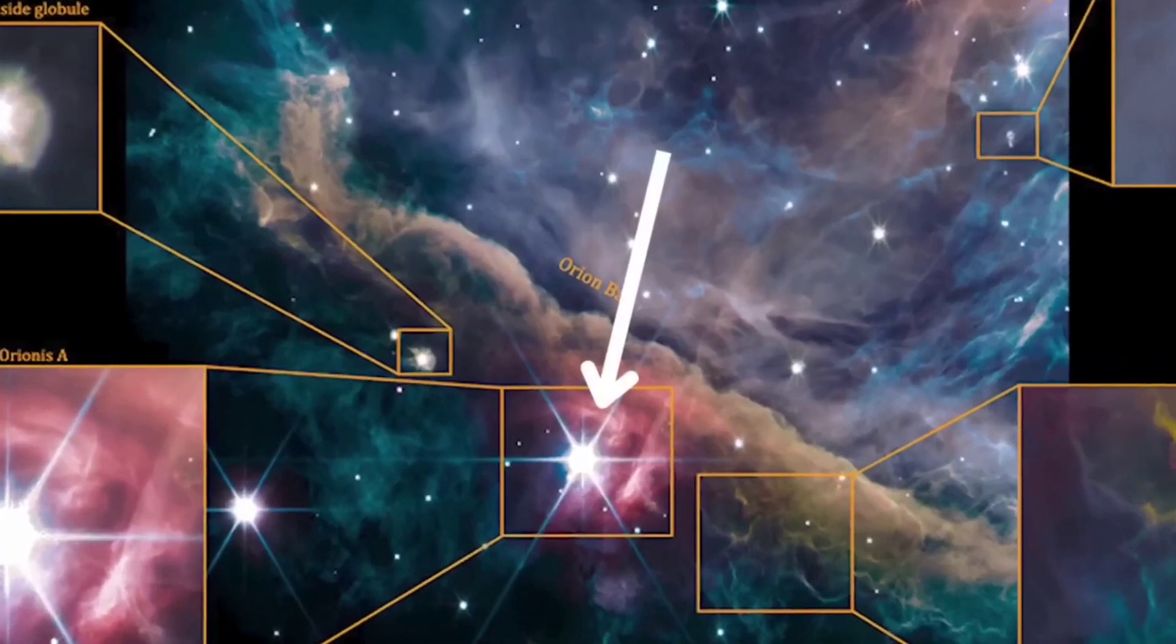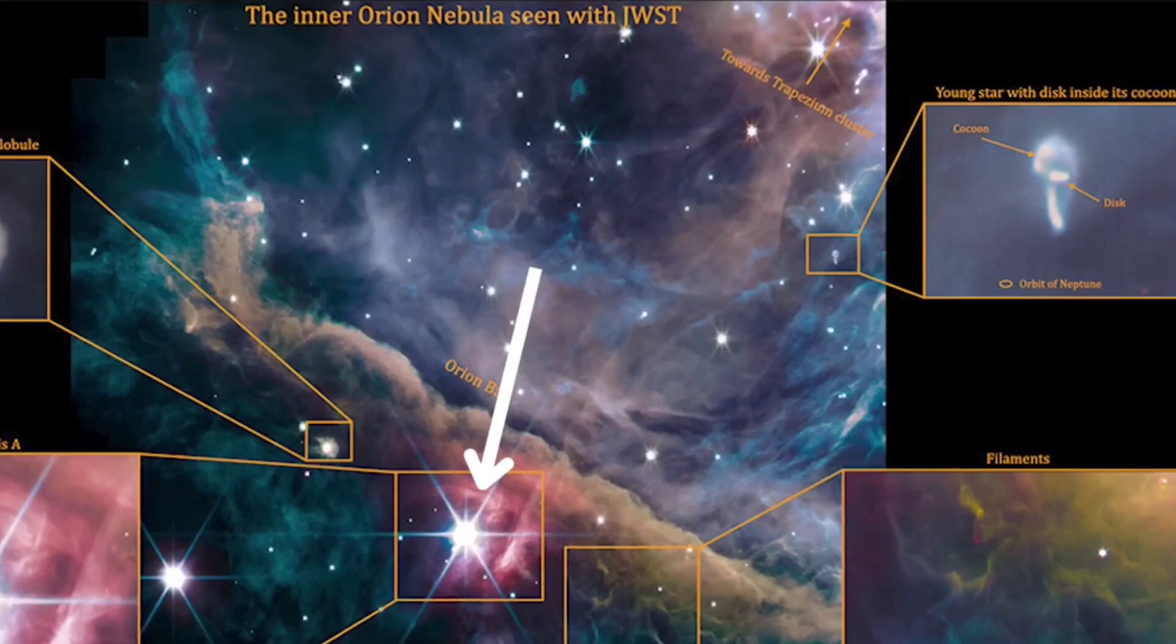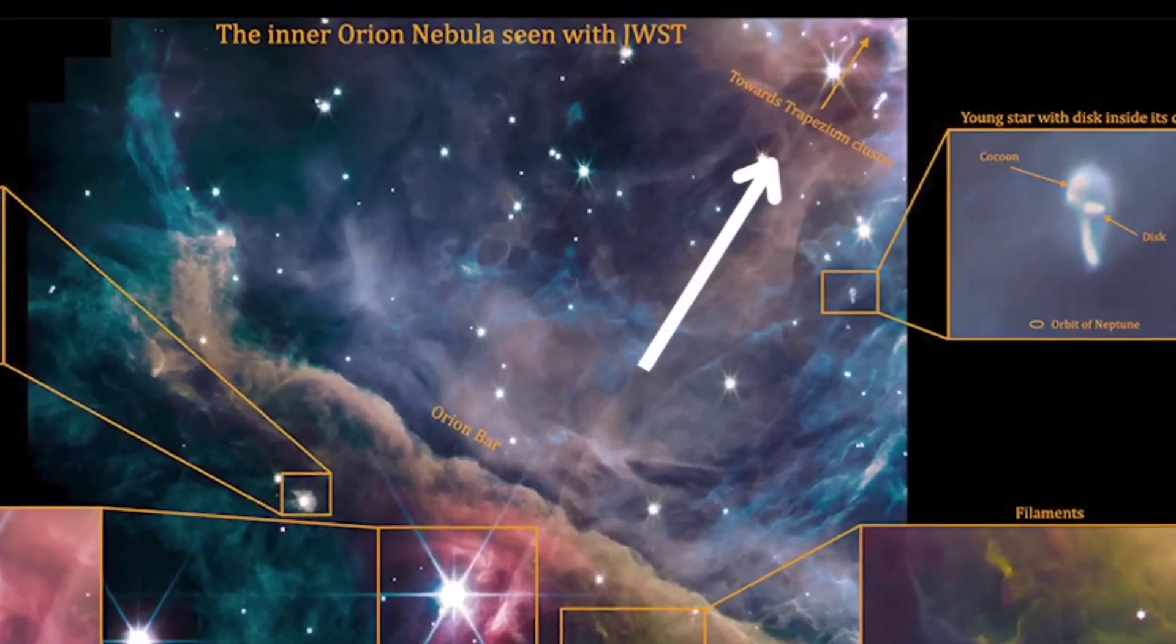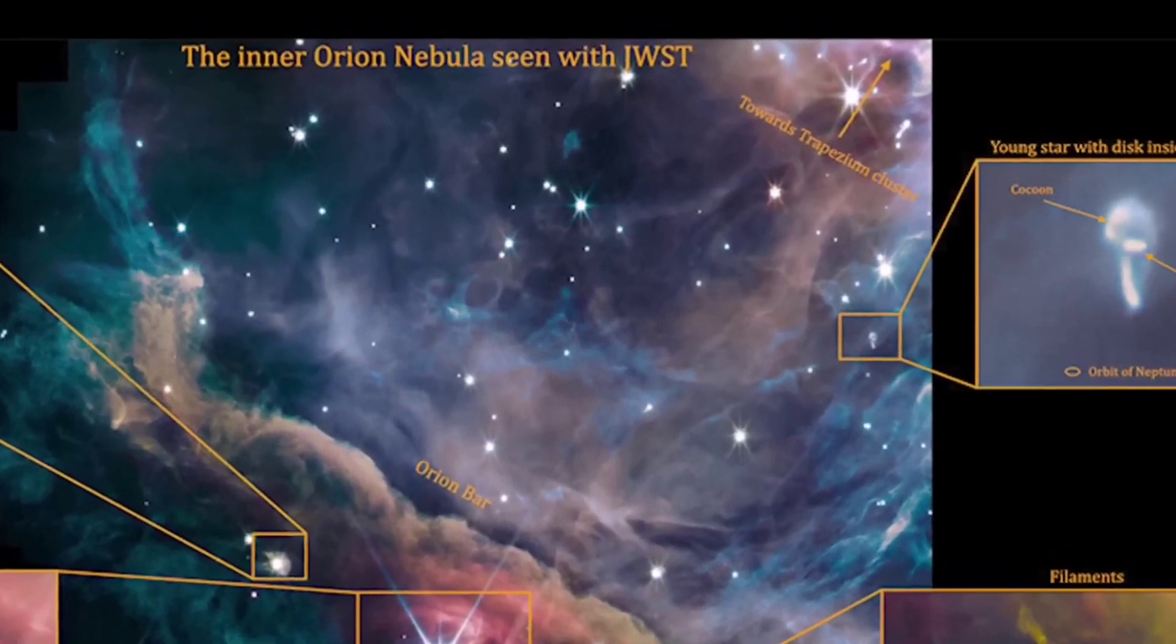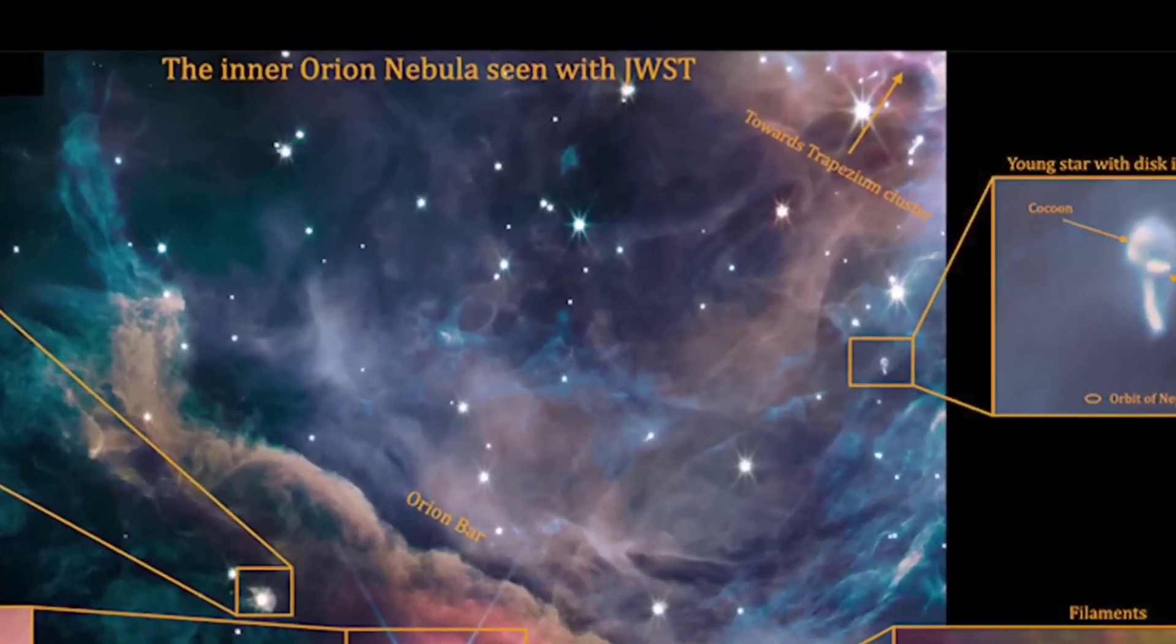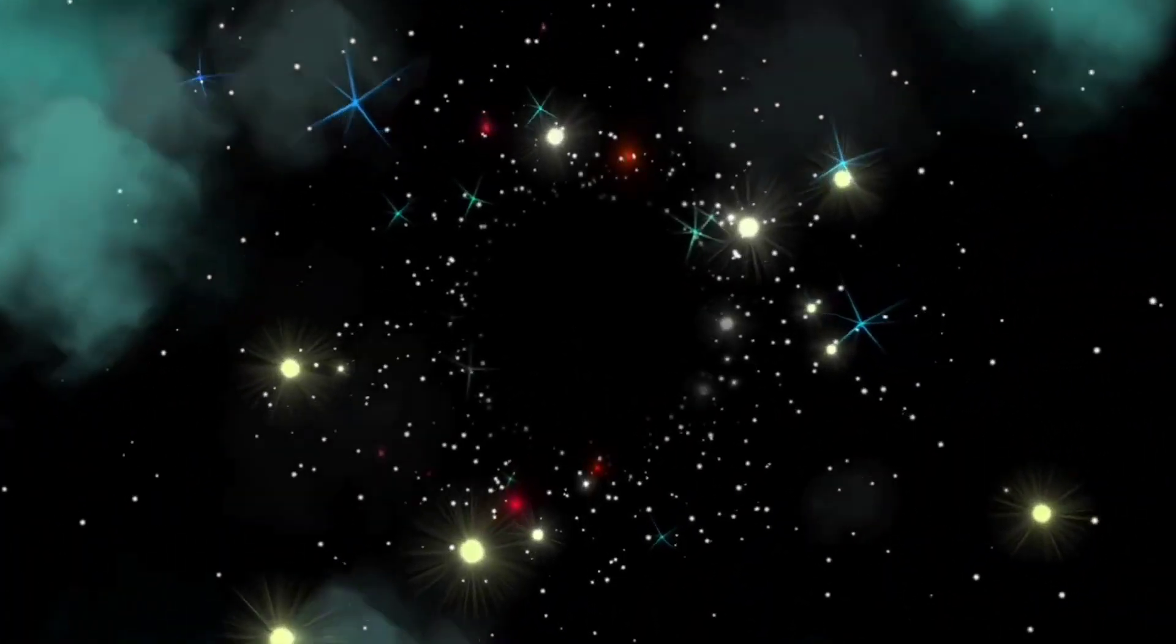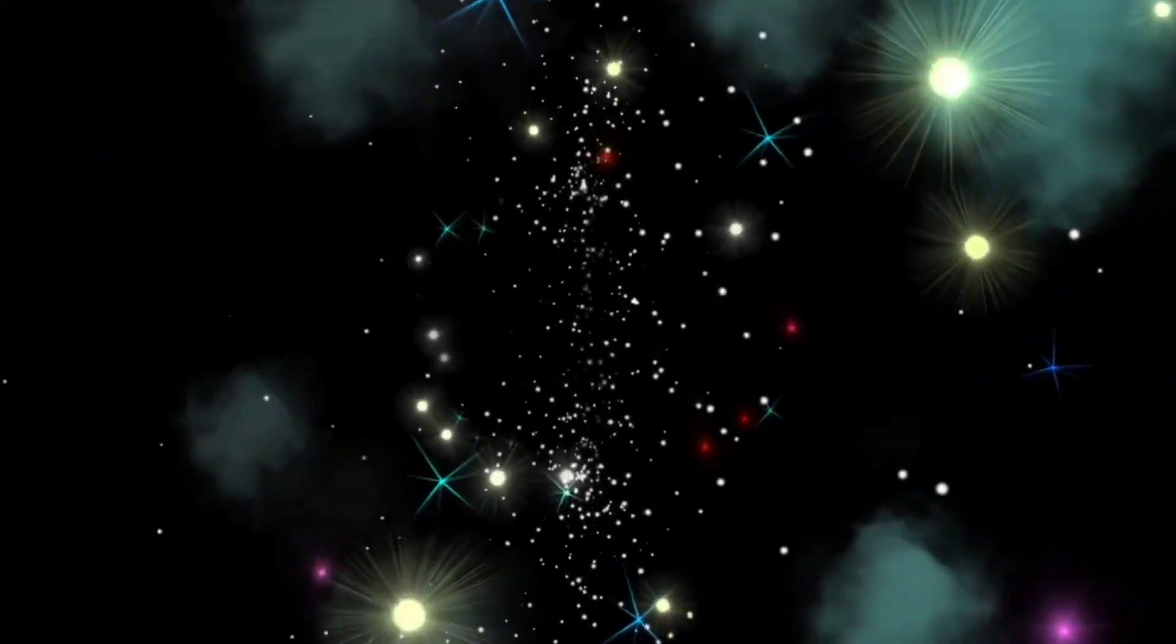The brightest star in the image is called O2 Orionis A, and it's one member of a multiple-star system next to the trapezium cluster, also known as O1 Orionis. Interestingly, O2 Orionis A is also a triple-star system. Although it appears very bright in the James Webb image, O2 Orionis A can only be seen by the naked eye from Earth under very dark skies.